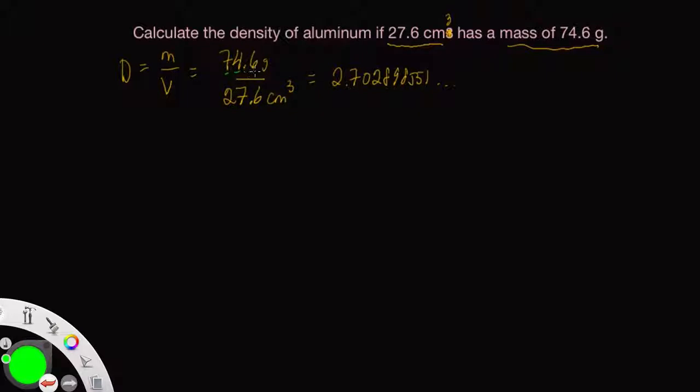This has three sig figs. This has three sig figs, so we need three sig figs in the answer. So the answer is going to be 2.70 with units of grams divided by cubic centimeters.